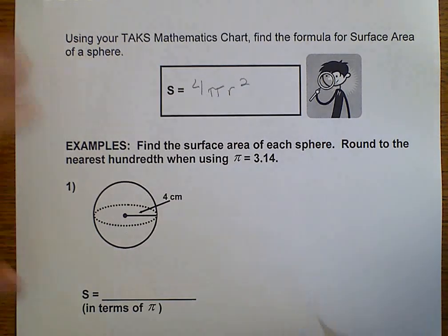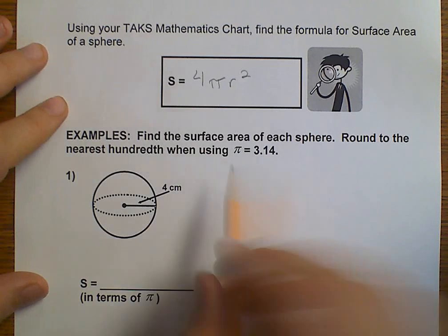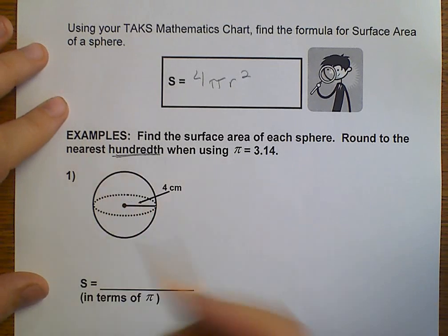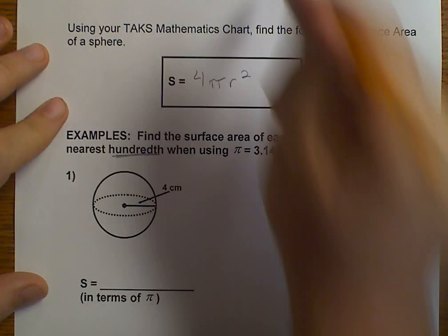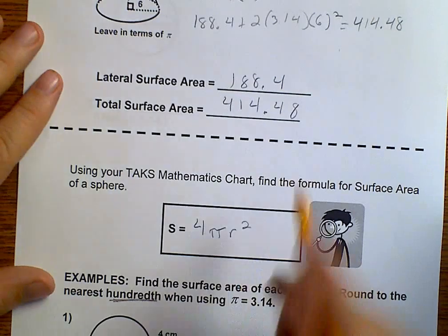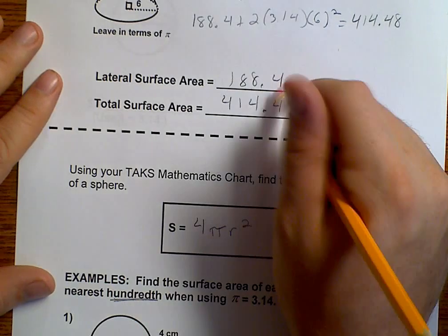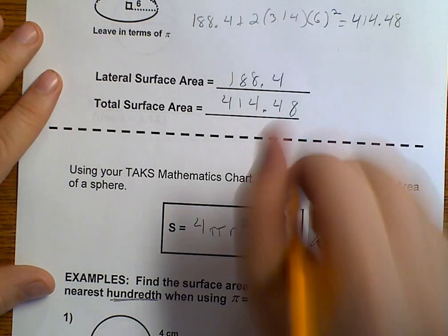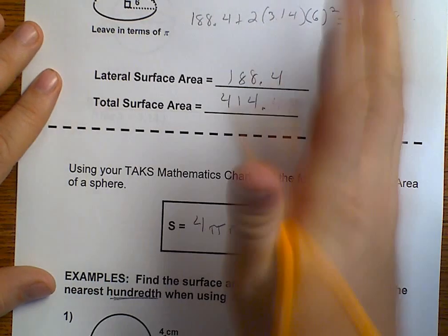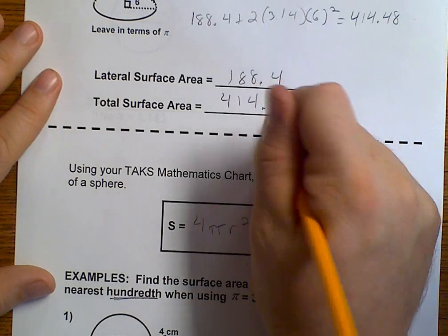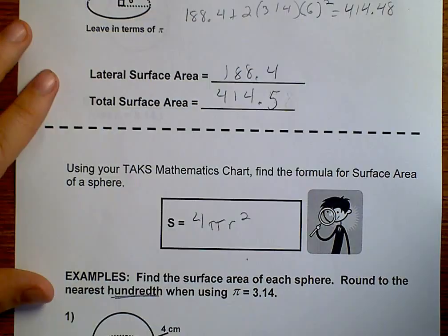So, to find the surface area of our sphere, it says nearest hundredth. So, that's two decimal places. This one up here, it was tenths. And the 4.8 simply turns into a 5 because that was for tenths. Now we're doing hundredths.